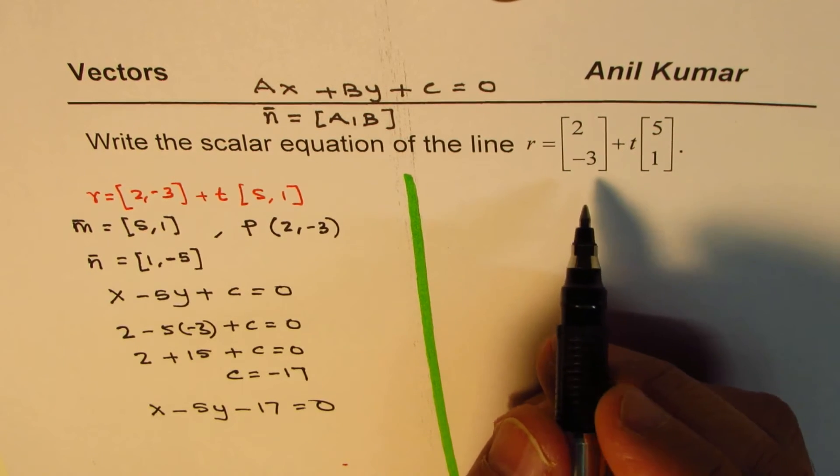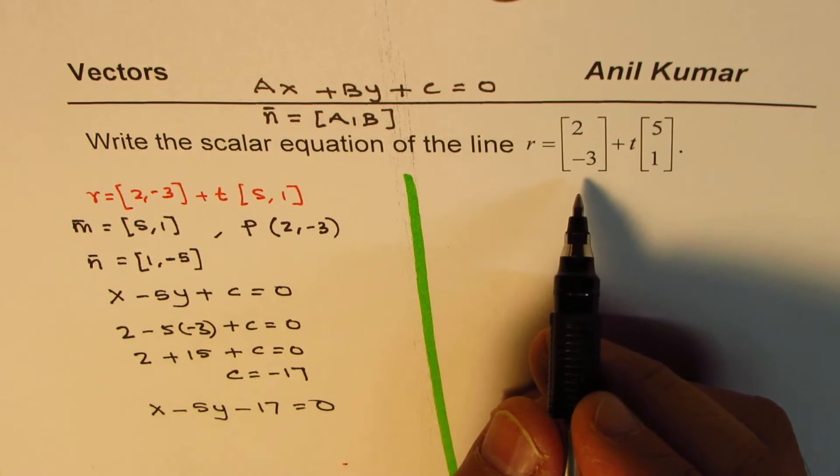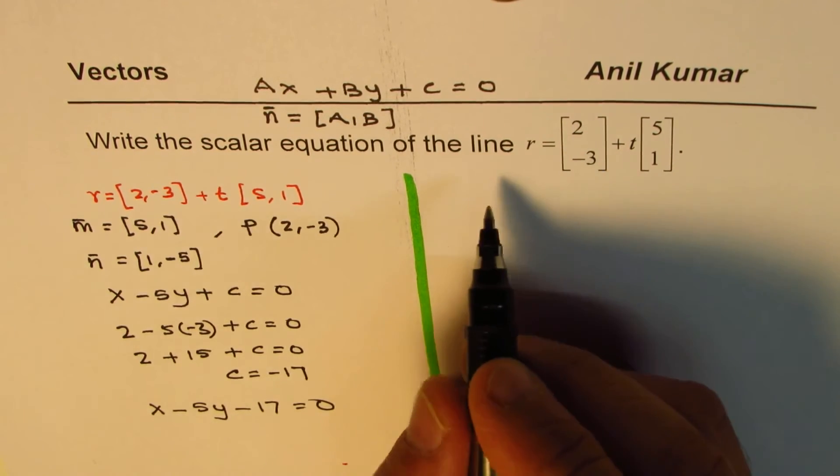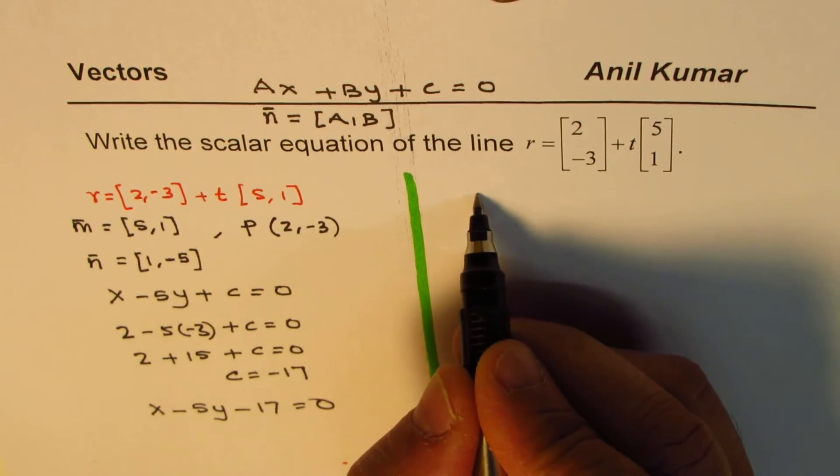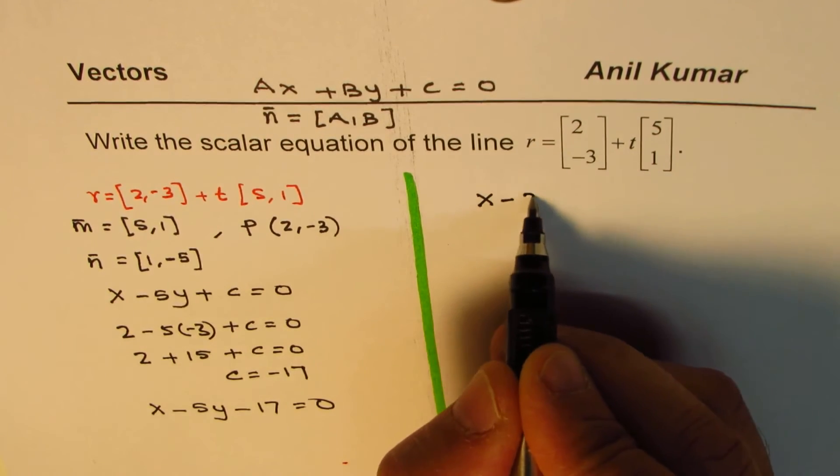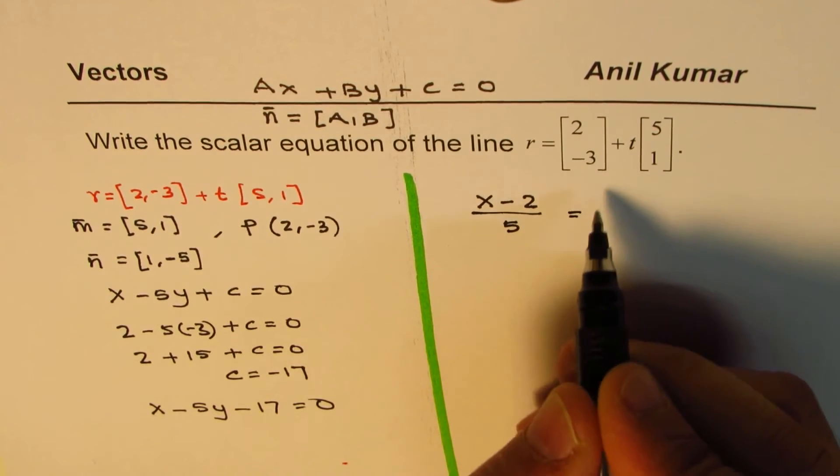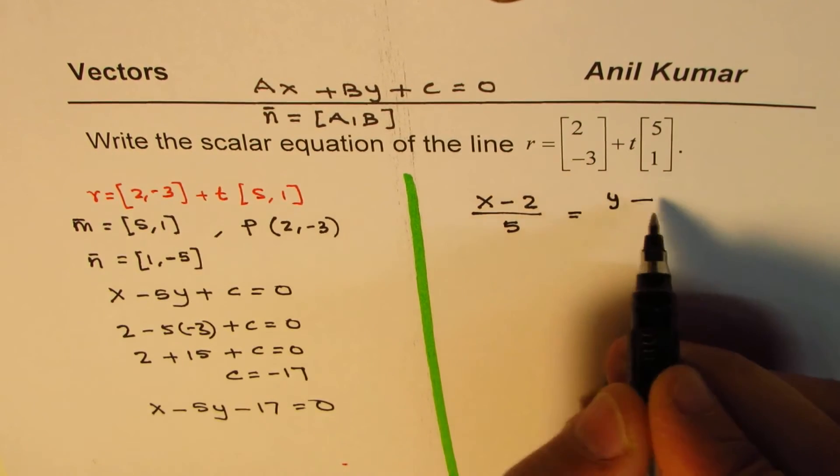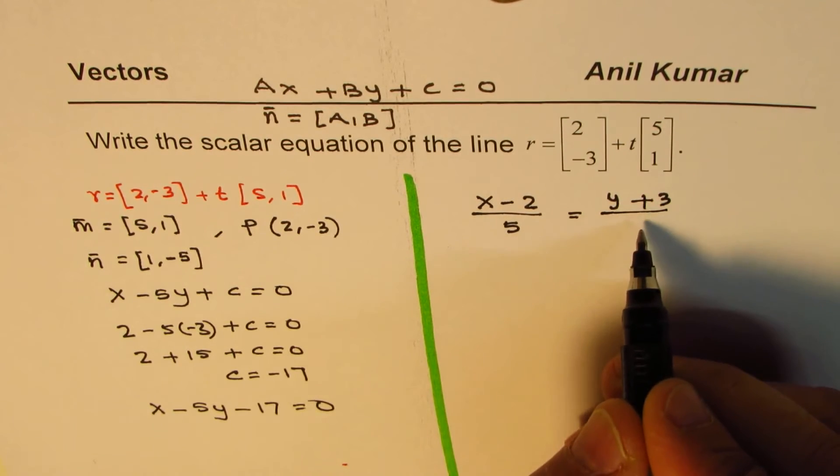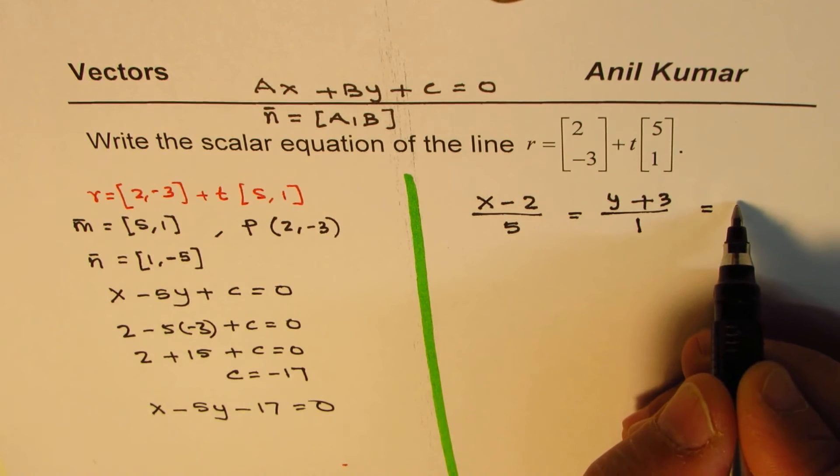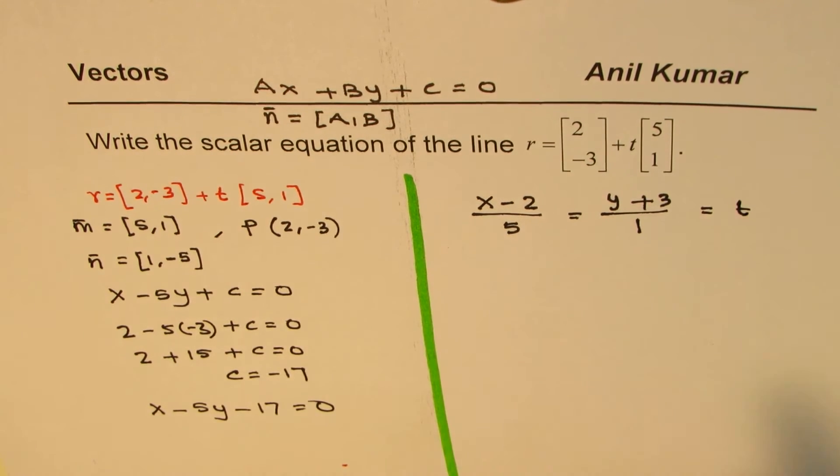Alternate way to do this: we could write symmetric form of this equation from here. We are given the point, so we could write this as (x minus 2) divided by 5 equals (y minus (-3)) divided by 1, which becomes (y plus 3) divided by 1. And this is equal to the parameter t. That is how we see the symmetric form.